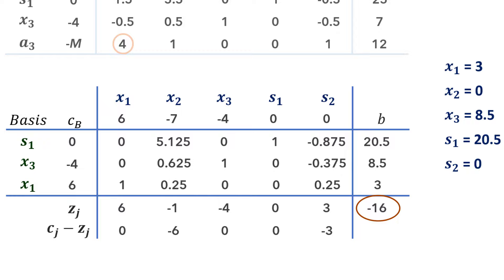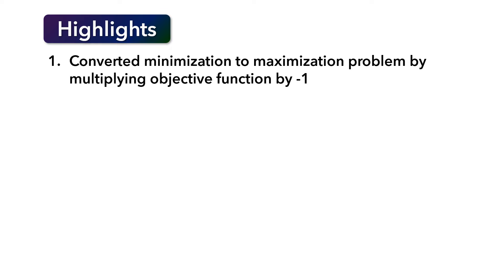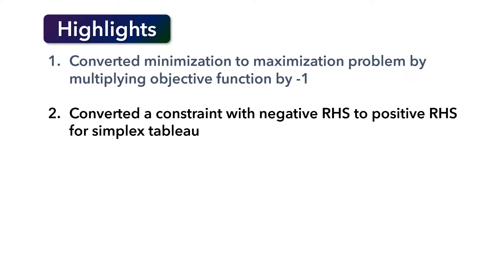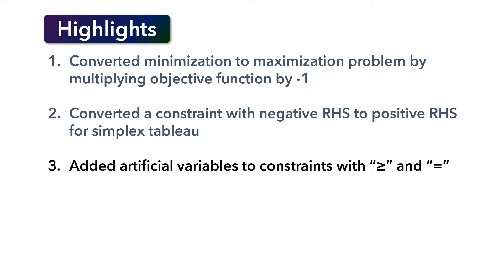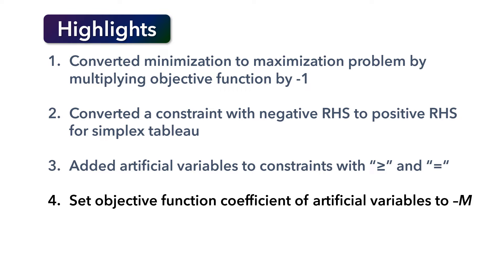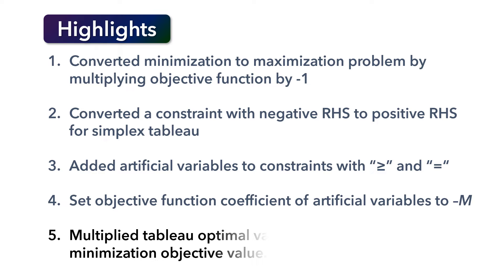Here are the highlighted key steps in solving this problem: 1) Because the problem was a minimization, we multiplied the objective function by negative 1 to convert it to a maximization problem. 2) Because the constraint had a negative right-hand side, we multiplied it by negative 1 to make it positive for the initial simplex tableau. 3) We added artificial variables to greater-than-or-equal and equality constraints for the initial simplex tableau. 4) We set artificial variable coefficients to negative m in the objective function, where m is a large positive number. 5) We evaluated the tableau in typical fashion and multiplied the optimal objective value by negative 1 to convert it back to a minimization value.